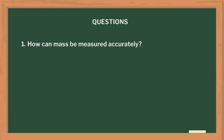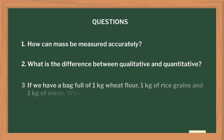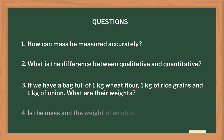After they do this, we can ask them the following questions: How can mass be measured accurately? What is the difference between qualitative and quantitative? If we have a bag full of 1 kilogram of wheat flour, 1 kilogram of rice grains, and 1 kilogram of onions, what are their weights? Is the mass and the weight of an object the same? Can you explain your answer?